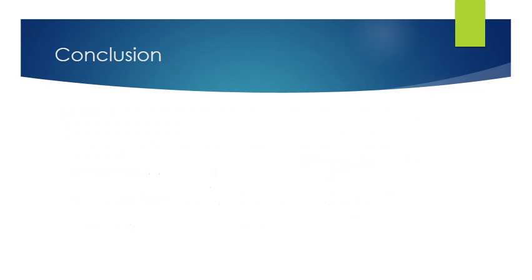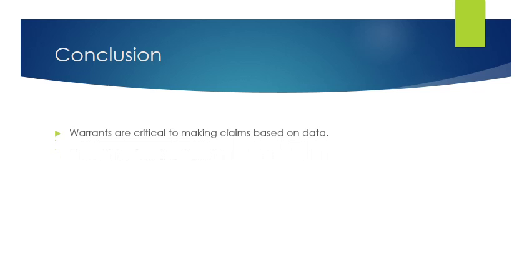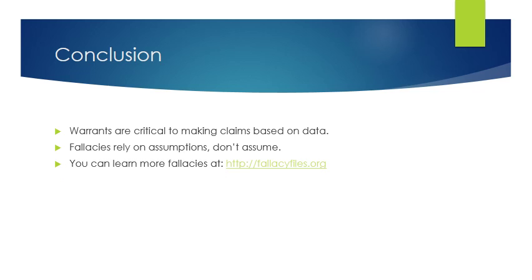Warrants are critical to making claims based on data, and now you have a deeper understanding of how warrants work and how they can go awry. Fallacies rely on assumptions — if anything, the key lesson in critical thinking is: don't assume, because that's the suspension of critical thinking. A great resource is fallacyfiles.org, which has tons of examples of fallacies. That's it for this lecture — I look forward to seeing you find some fallacies.